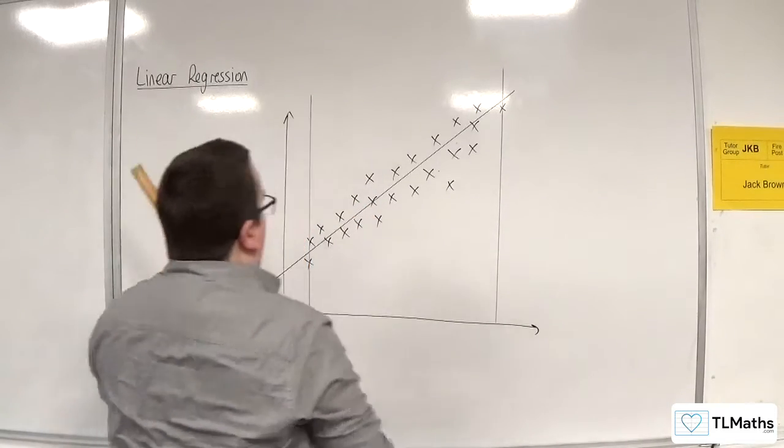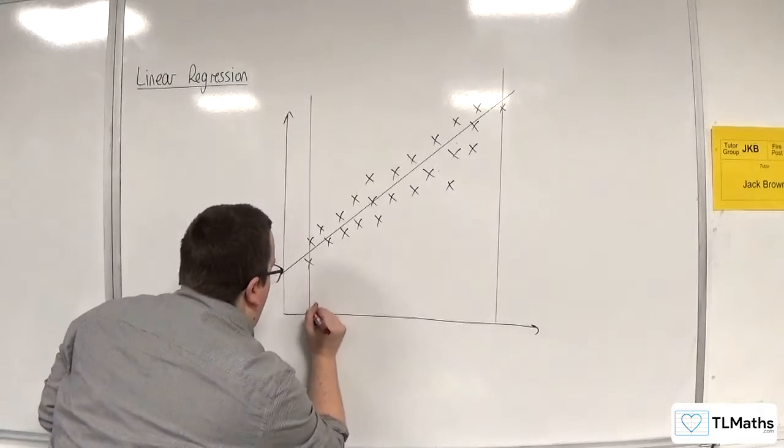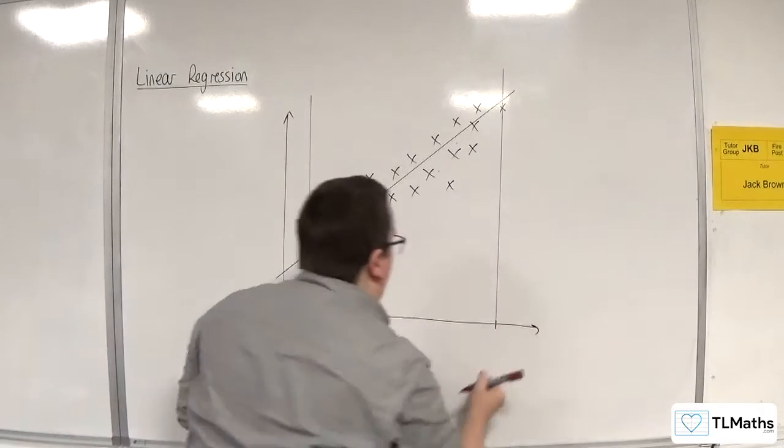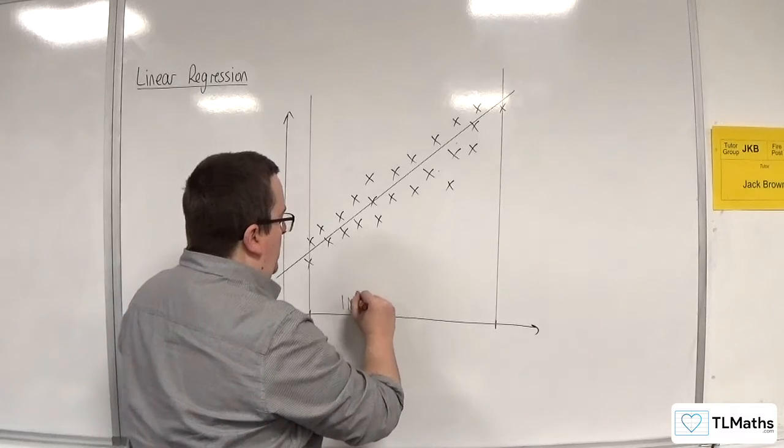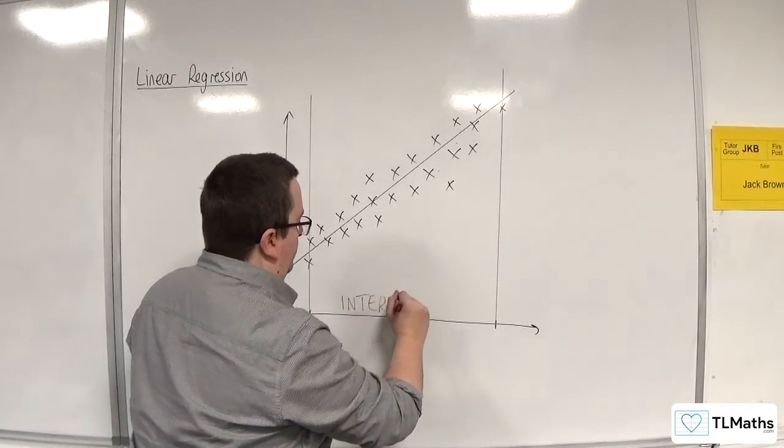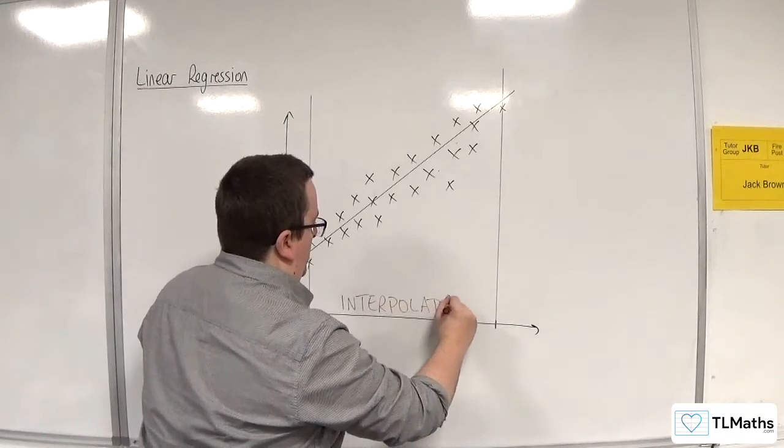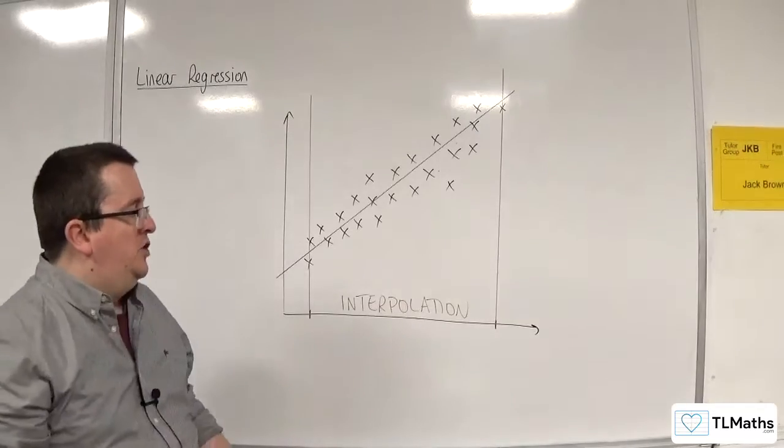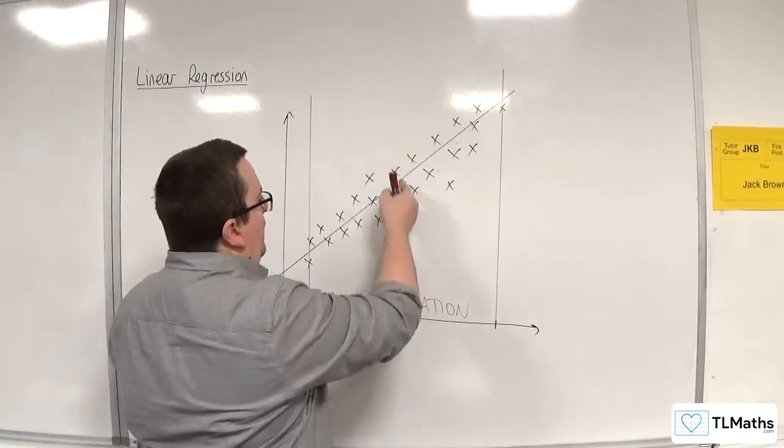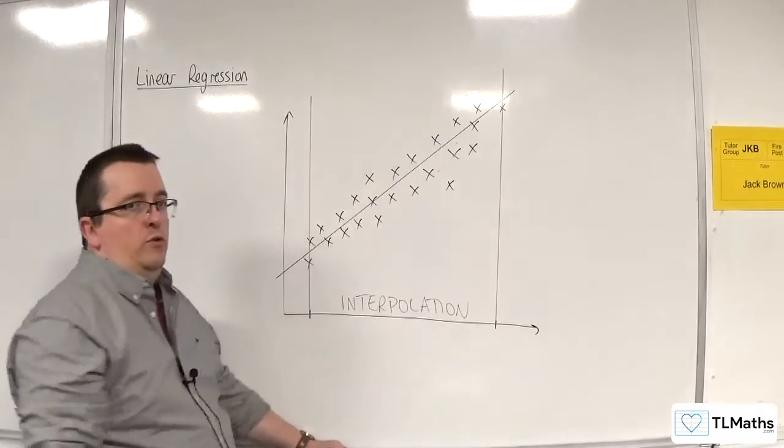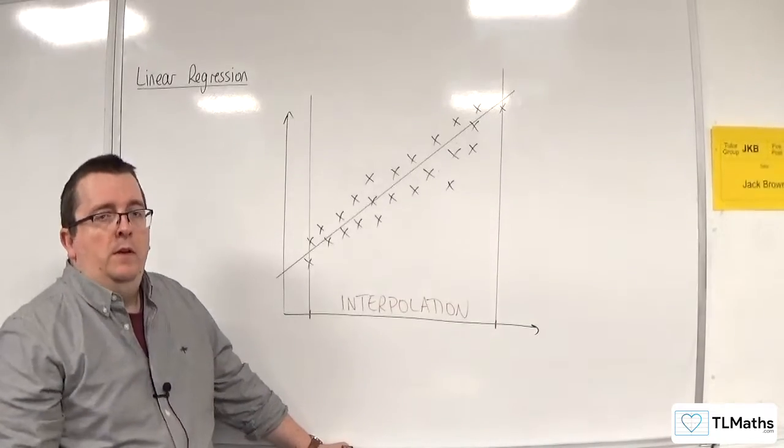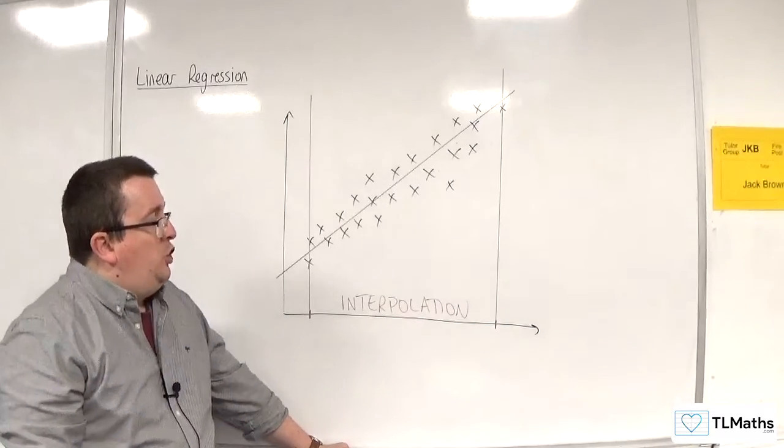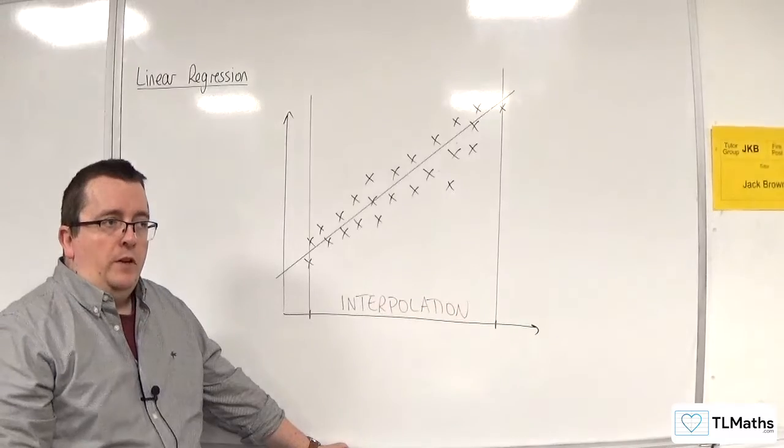So I can use any X value between there and there, and I would refer to that as interpolation. So any of these X values between those two, I can go up to the line and then get my predicted Y value. That's perfectly fine and that should be reasonable.